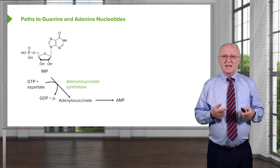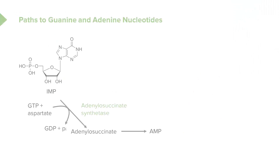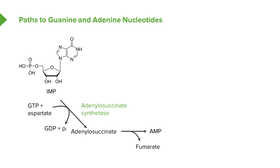Adenylosuccinate can be converted into AMP by simply splitting out a molecule of fumarate. You may recall from the description of the urea cycle that putting an aspartic acid onto a molecule and then removing a fumarate results in a net transfer of an amine to the molecule. So this is a transamination analogous to what we see in the urea cycle, and the net result is that the molecule has gained an amine — that's how AMP is made.